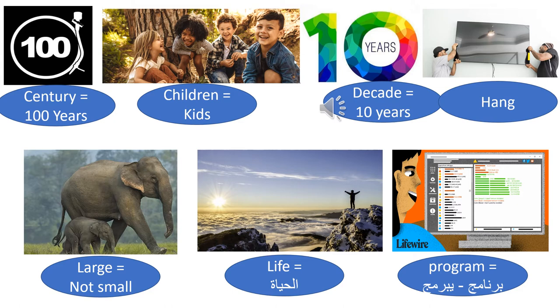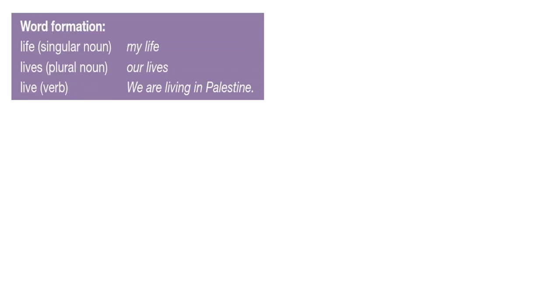There are two elephants — one of them is large, one is small. Large elephant, small elephant. And we also have the words 'life' and 'program.' Now let's move to word formation — how to form a new word from another existing word.